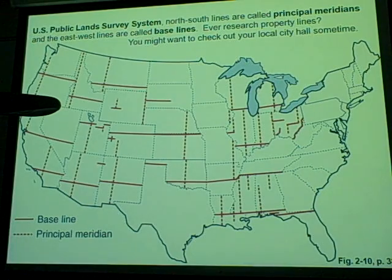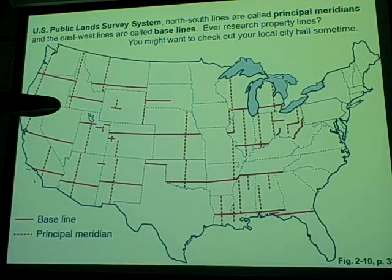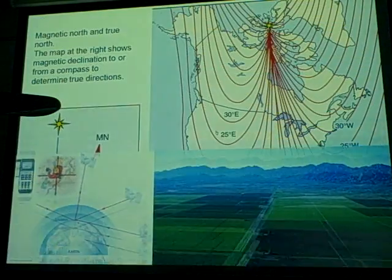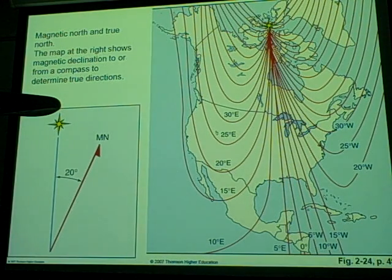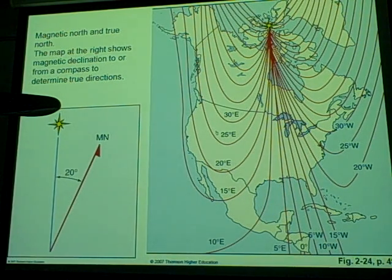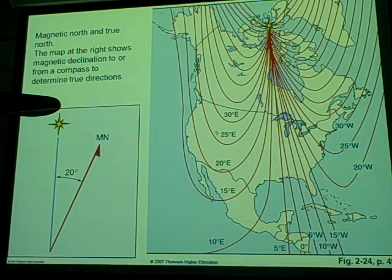The public land survey system is an interesting topic if you're ever looking at property lines or buying property. The main thing to understand is that magnetic north and the north marked on the North Pole are slightly different places. Magnetic north is determined by the spinning molten core in the center of our planet, whereas the North Pole on our maps is basically a grid system — these two are just slightly different.